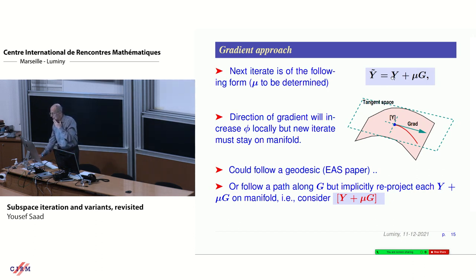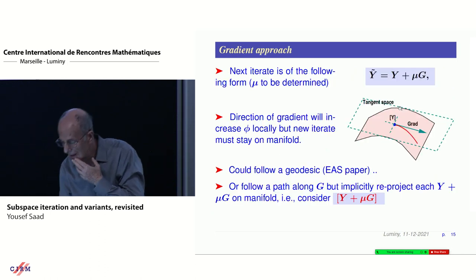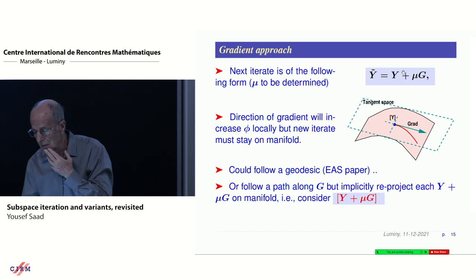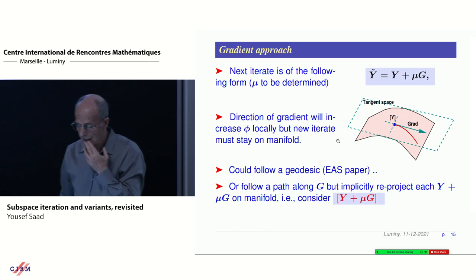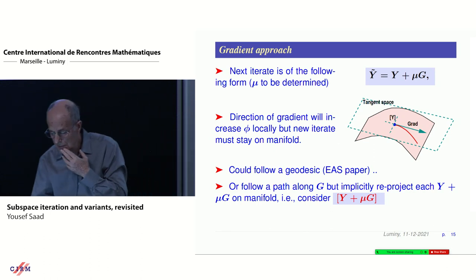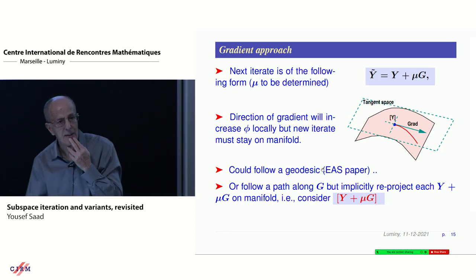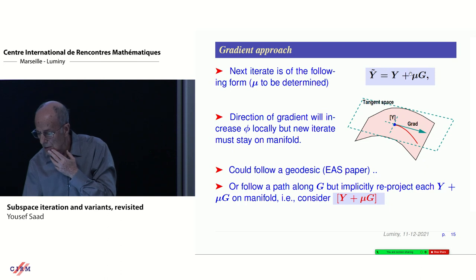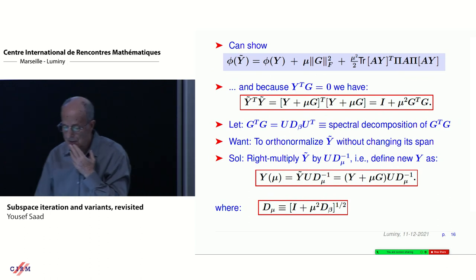Now, what I would like to do is do a gradient type method. I would like to move from Y to the new Y, Y tilde by adding mu times G where G is this matrix, the gradient. I have to realize this is not on the manifold. But this is essentially moving along the tangent space. You could follow a geodesic, that's what they do in this paper. However, I found it to be a little complicated to do it this way.